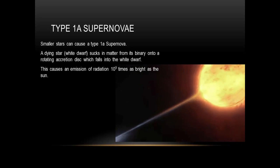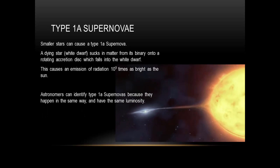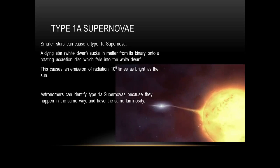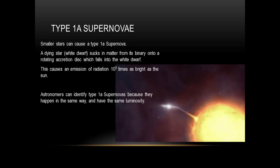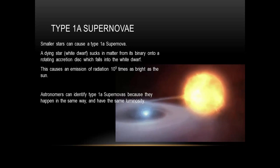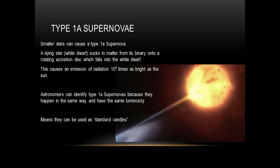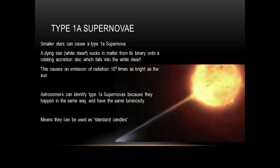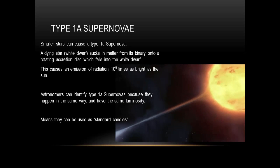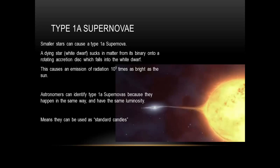This supernova is very visible. Astronomers can identify these 1a supernovas because they happen in the same way by this accretion method, and they have more or less the same luminosity. This gives them the quality of being standard candles. If you can see how bright the star is, and you can see how bright you know it's supposed to be, you can work out how far it is.